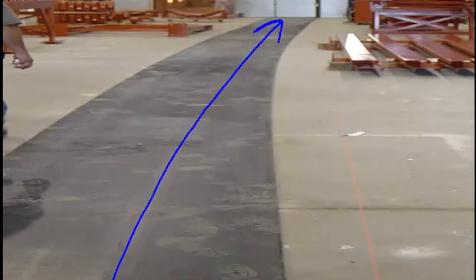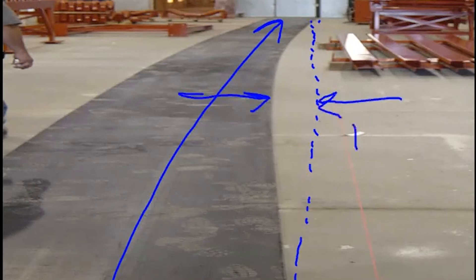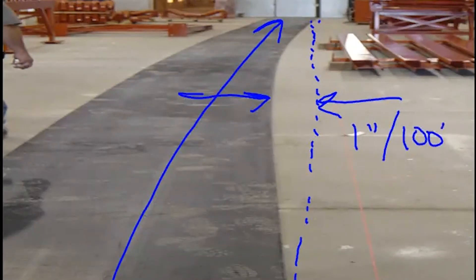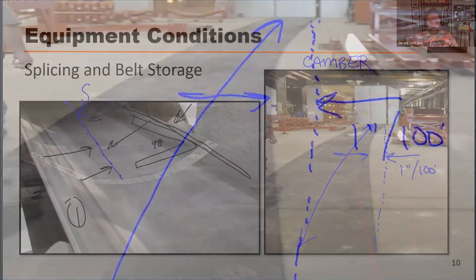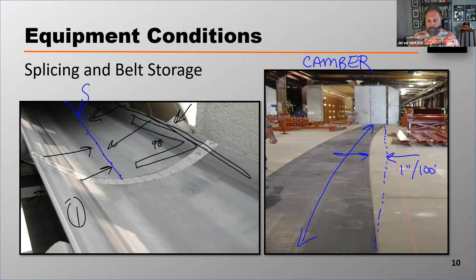If you were to roll that belt out straight, you would want the line from edge to edge to not deviate more than about one inch per 100 feet. If that belt deviates more than one inch per 100 feet in length, that belt has camber. Camber is a stretch on one side of the belt but not the other, and that can cause the belt to mistrack.